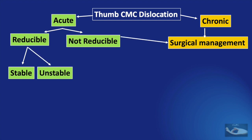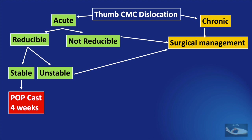If the joint is stable after reduction, a POP cast application for four weeks is advised. If the joint is unstable after reduction, surgical management is again indicated.